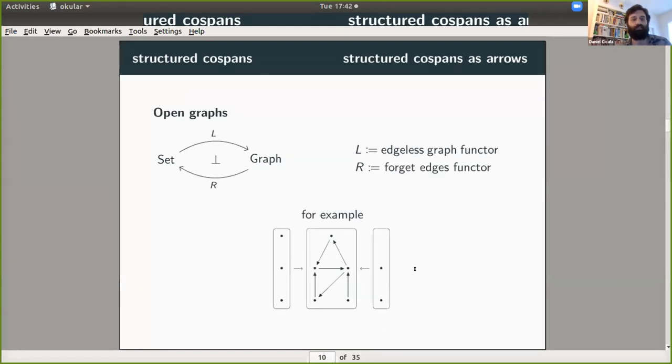So just to give you an example, open graphs is nicely discussed using structured cospans. And so here we have this adjunction between sets and graphs where L sends a set to the edgeless graph on that set. Then R forgets any edges. And then here's an example of a structured cospan down below. And you can see that we have a set of three inputs and two outputs. And basically what these arrows are doing is they're just selecting which nodes of this graph in the middle can serve as inputs and outputs.